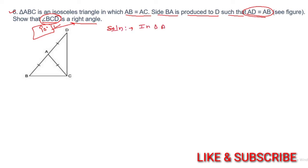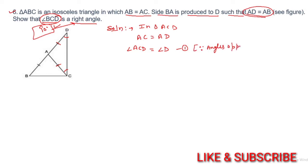In triangle ACD, AD equals AC. If these two sides are equal, then the two angles opposite to them are also equal: angle ACD equals angle D. Take this as equation 1. Reason: angles opposite to equal sides are equal.